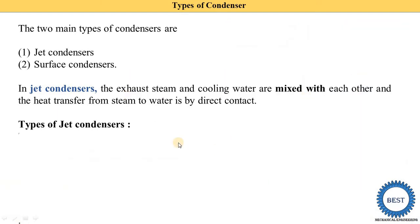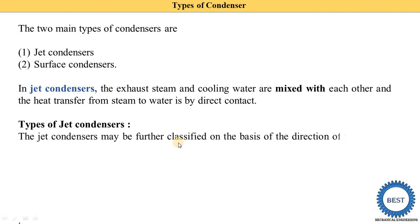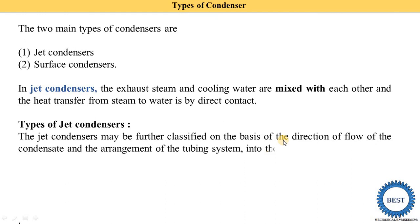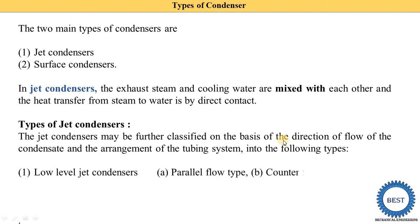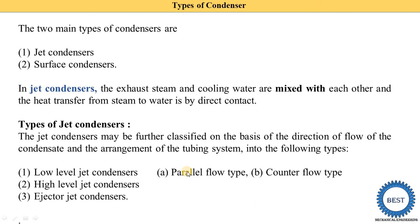This is called the jet condenser. Jet condensers may be further classified on the basis of the direction of flow of the condensate and the arrangement of the tubing system. The first type is the low-level jet condenser, which has two sub-types: parallel flow, where steam and cooling water flow in the same direction, and counter flow, where they flow in opposite directions. The second type is the high-level jet condenser, and the third is the injector jet condenser.